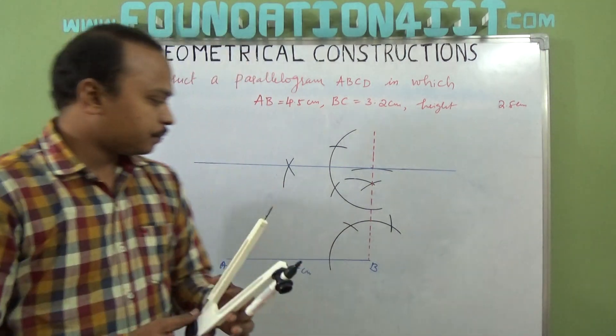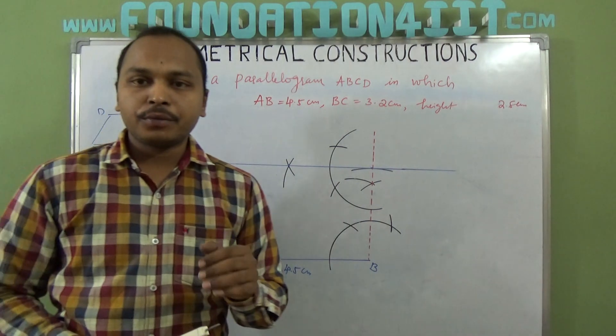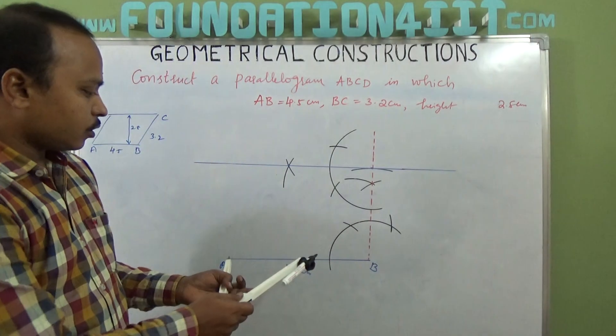Okay, now this side is parallel to this, so on this line only there is C and D also. But if you observe, B to C is 3.2, and A to D is also the same 3.2, because in a parallelogram, opposite sides are parallel and equal. So you should take...